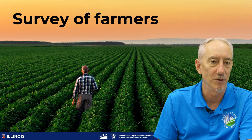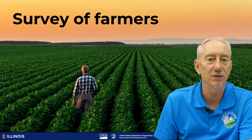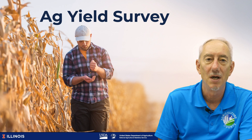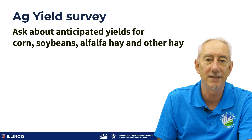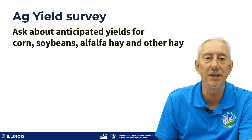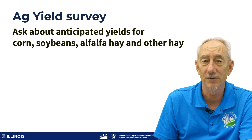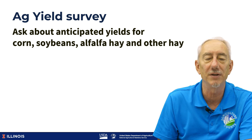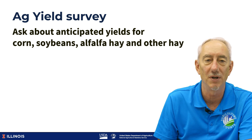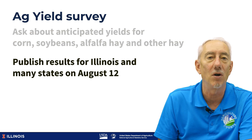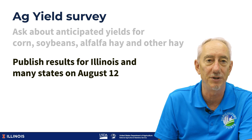The first method is the survey of farmers, and NASS calls this project the Ag Yield Survey. We mail surveys in late July to several hundred farmers in Illinois. We ask about their anticipated yields for corn, soybeans, alfalfa hay, and other hay. And it's also one more chance for us to get information on yields for wheat and oats. NASS will publish results for Illinois and many states on August 12 of this year.